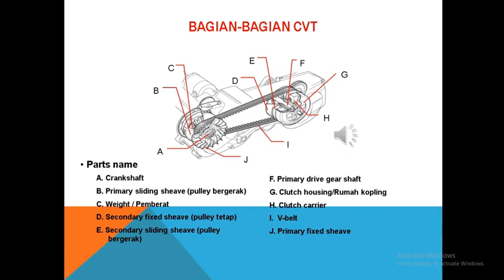Sedangkan yang kelima, Secondary Sliding Shaft atau Puli Bergerak. Puli Bergerak di dalam sistem transmisi otomatis berfungsi berkesinambungan dengan puli primer yang mengatur kecepatan berdasarkan besar gaya tarik sabuk yang diperoleh dari puli primer.